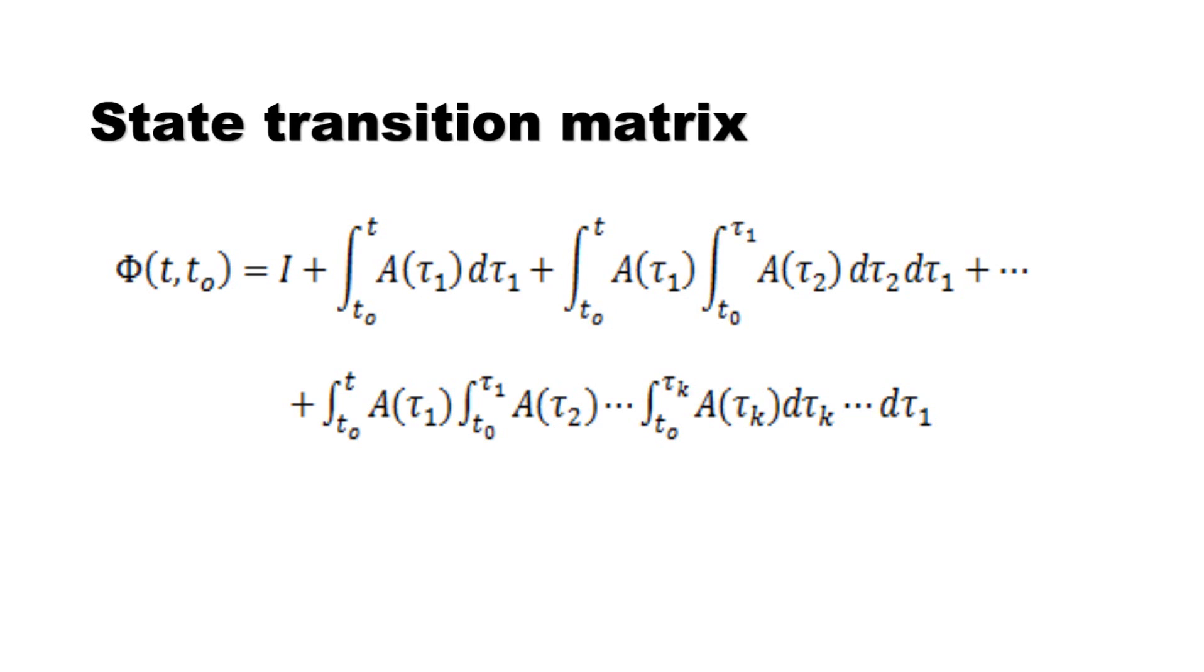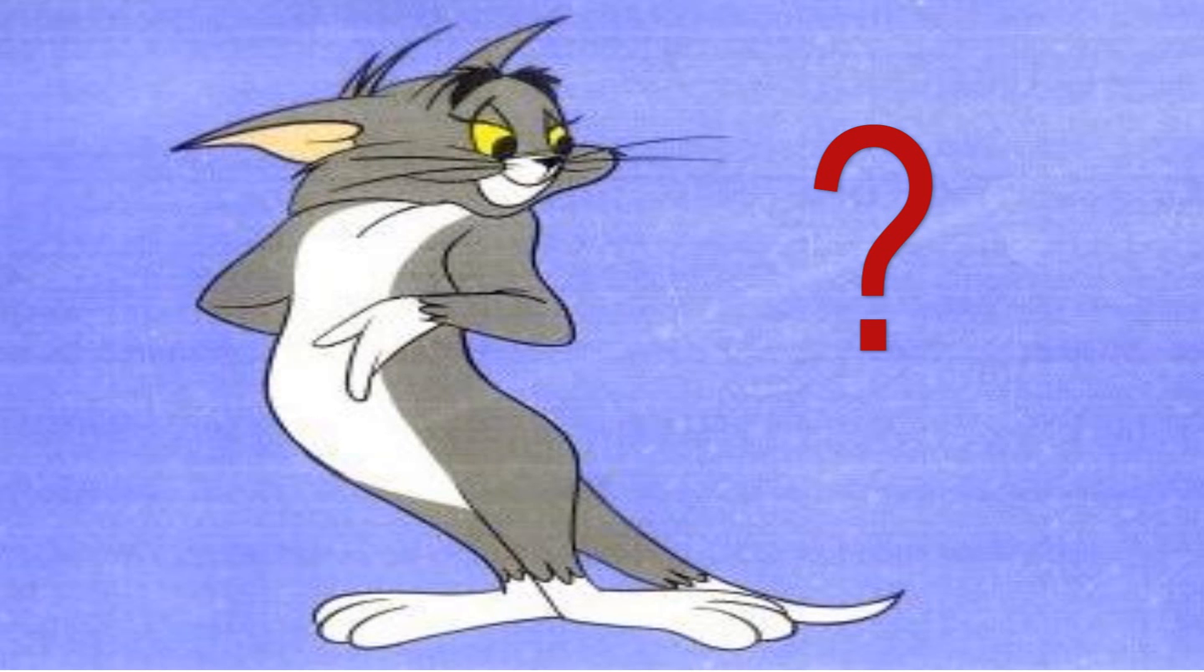State transition matrix is defined by the following formula, and it depends only on the time interval t0 to t, not initial condition x0. What the hell is it? It's so complicated.